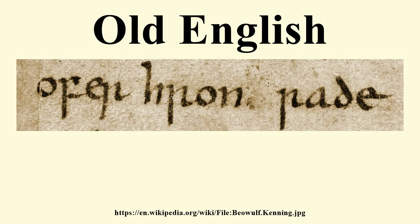Old English, or Anglo-Saxon, is the earliest historical form of the English language, spoken in England and southern and eastern Scotland in the early Middle Ages. It was brought to Great Britain by Anglo-Saxon settlers probably in the mid-fifth century, and the first Old English literary works date from the mid-seventh century. After the Norman Conquest of 1066, English was replaced for a time as the language of the upper classes by Anglo-Norman, a relative of French, and Old English developed into the next historical form of English, known as Middle English.